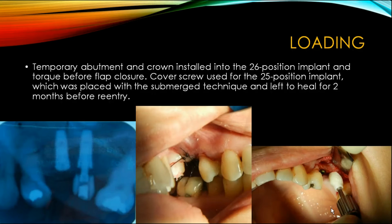Both implants were placed approximately 1 mm subcrestly and resonance frequency analysis measurements were taken. For the 2.6 implant, we immediately loaded with a temporary abutment and composite filling was used for the crown. If we look at the picture in the middle, we can see the crown is totally out of occlusion. If we look at the periapical x-ray on the left, we can see the implant penetrating the maxillary sinus.